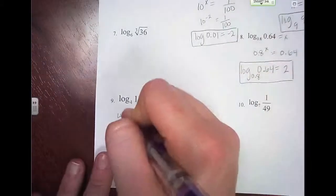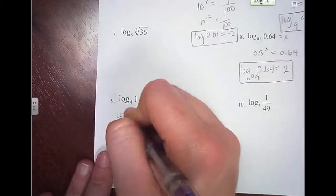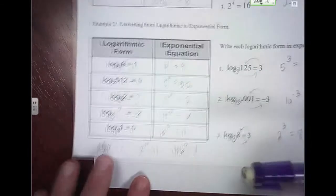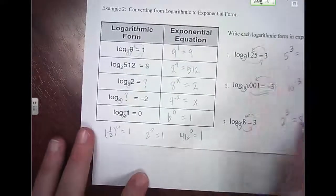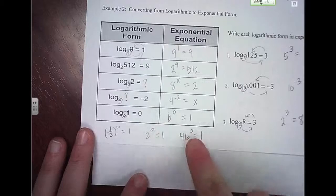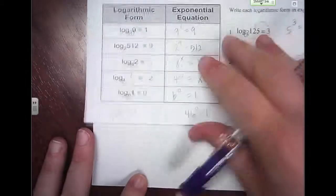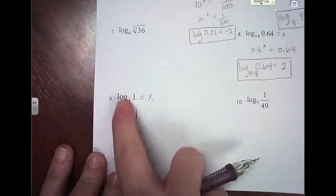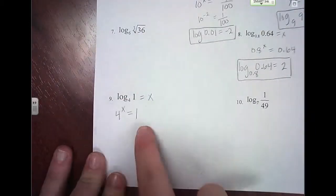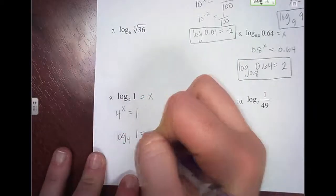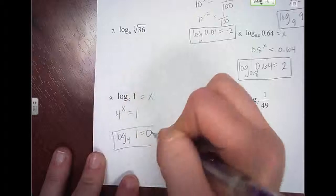Number 9: set this equal to x and write it in exponential form. So 4 to what power equals 1? This is that whole thing we talked about earlier — anytime you raise anything to the 0 power, you're always going to get 1. So if any base raised to x gives you 1, it's always going to equal 0. So log base 4 of 1 equals 0.